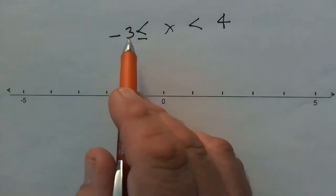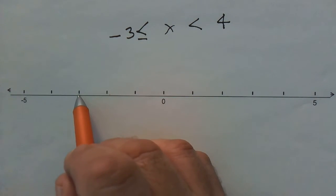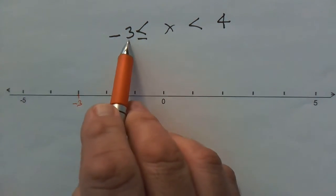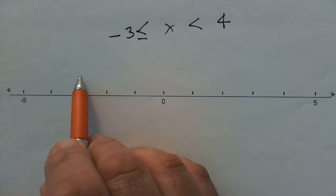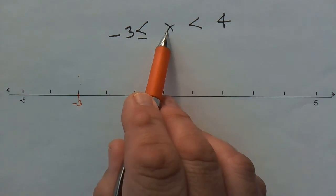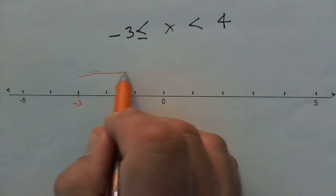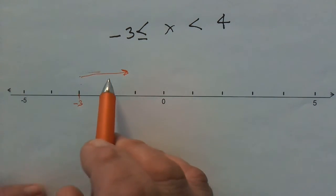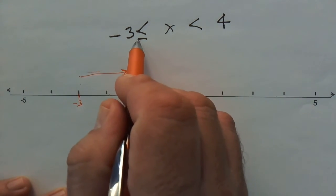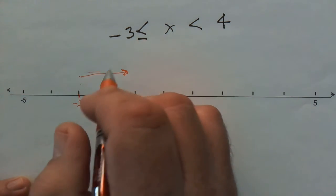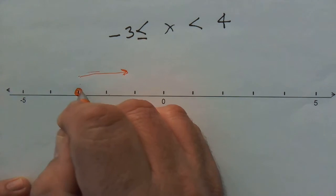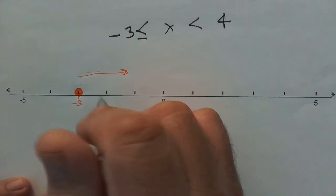Negative 3 is our starting point — that's 1, 2, 3 to the left of zero. Our x must be larger than negative 3, so the line goes to the right from that point. We need to consider whether negative 3 is included. Since the inequality says less than or equal to, negative 3 is included. This is shown either as a solid dot on negative 3, or as a bracket — both mean the same thing depending on the textbook.